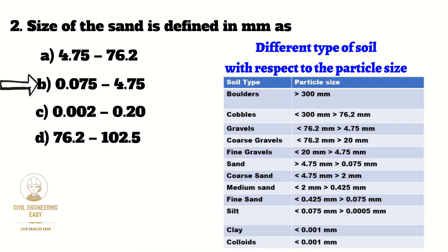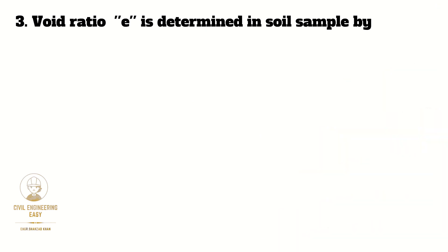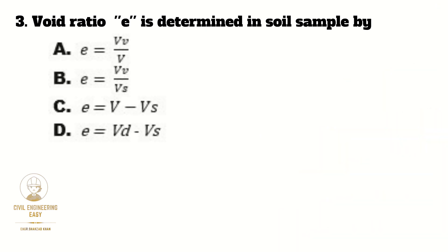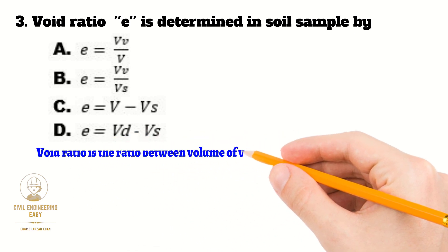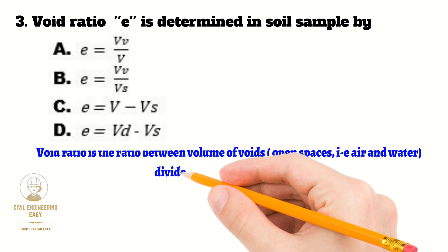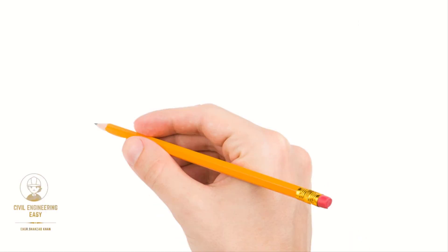In MCQ number three, the void ratio e is determined. Option A is volume of voids divided by total volume, Option B is volume of voids divided by volume of soil solids, Option C is total volume minus volume of soil solids, Option D is dry volume minus volume of soil solids. The void ratio is the ratio between volume of voids (air and water spaces) divided by volume of soil solids. The correct option is B.